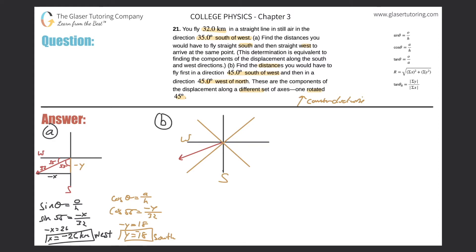I'll create axes rotated about 45 degrees — those are the new axes rotated 45 degrees. You could call it rotated clockwise or counterclockwise; it doesn't really matter, which is why they didn't specify. If this is my new y-axis and this is my new x-axis, let's note the 35-degree angle from the original vector and draw our triangle.